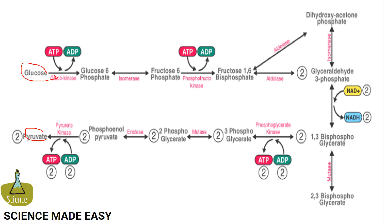In the first step, a phosphate group is added to glucose in the cell cytoplasm by the action of the enzyme glucokinase, converting glucose into glucose 6-phosphate. In the next step, glucose 6-phosphate is isomerized into fructose 6-phosphate by the enzyme isomerase.